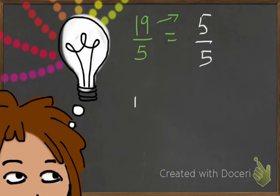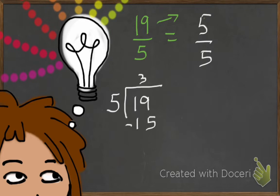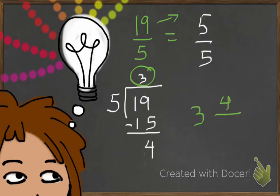To change this improper fraction into a mixed number, we simply divide 19 by 5. How many 5s go into 19? There are three 5s — 3 times 5 equals 15 — and 19 take away 15 equals 4. So our mixed number is 3 and 4 fifths. The 3 is our whole number, 4 is our numerator, and 5 is our denominator. That is how you turn an improper fraction into a mixed number.